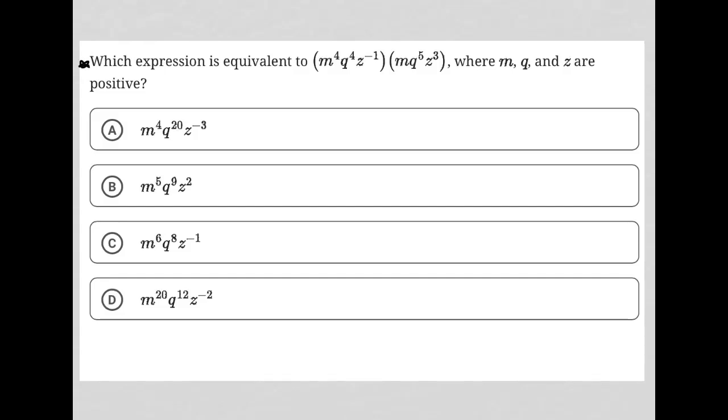So this question says, which expression is equivalent to m to the fourth, q to the fourth, z to the negative first, times mq to the fifth, z to the third, where m, q, and z are positive?